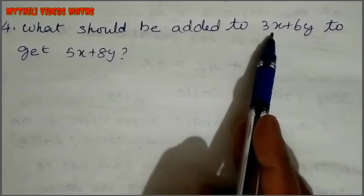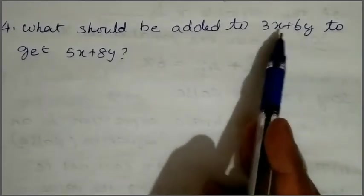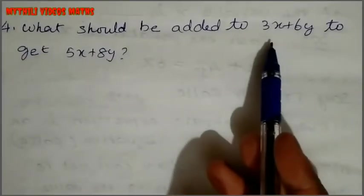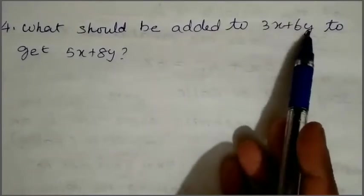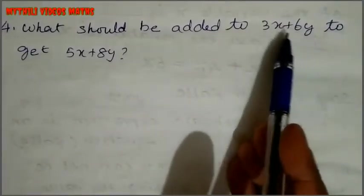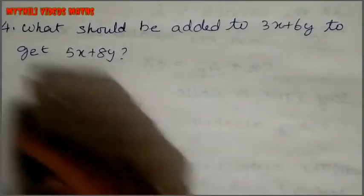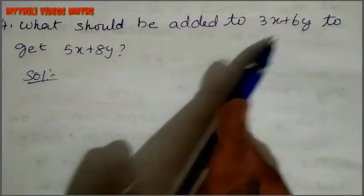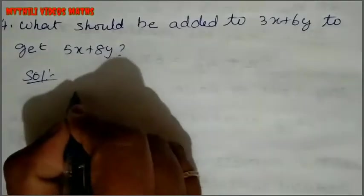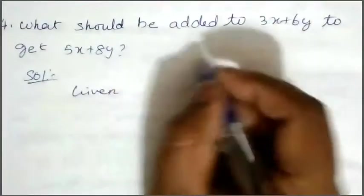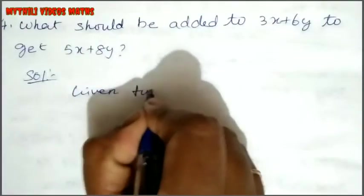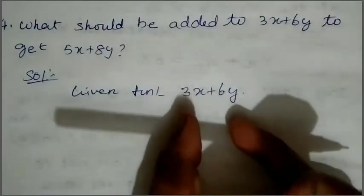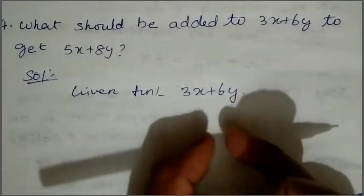So just imagine 3x. This is already like terms - there are x terms and y terms. So we have to add like terms. First write what should be added to this number. Given function is 3x plus 6y.